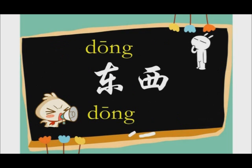But sometimes, even the same characters can bear different pronunciations and meanings. Like this word. Do you know it's pronounced as 东西 or 东西? Actually, both are correct. With the same characters, they are totally different words.